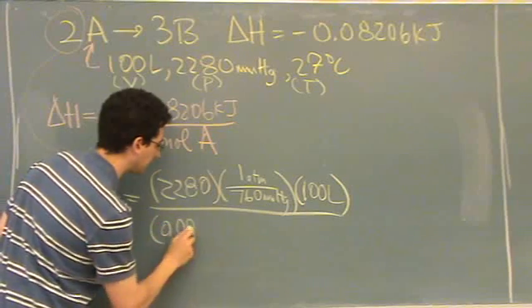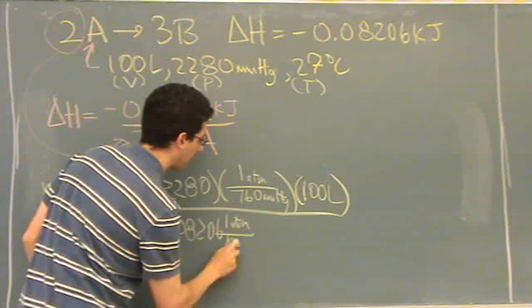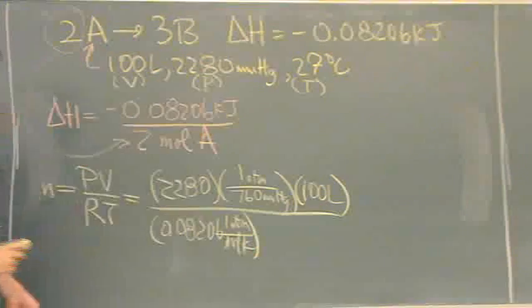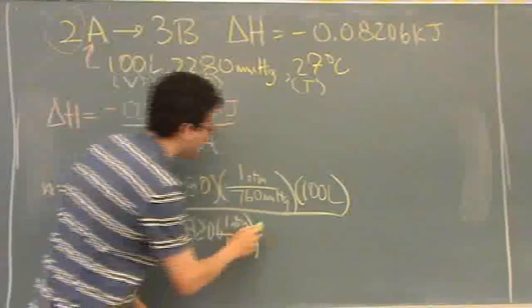On the bottom is R. R is going to be given on the back of the test: 0.08206 liters atmospheres per mole kelvin. And then T is 27 plus 273 because I gotta change that to kelvin.